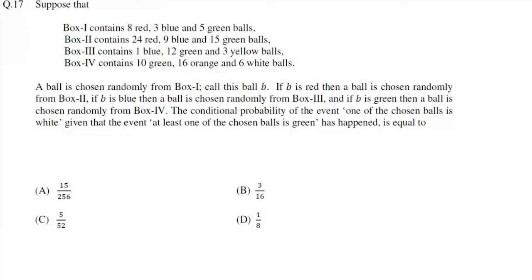Now here are the questions. We have 4 boxes. Box 1 contains 8 red, 3 blue, 5 green. Box 2 contains 24 red, 9 blue, 15 green. Box 3 contains 1 blue, 12 green, 3 yellow. And box 4 contains 10 green, 16 orange and 6 white balls.